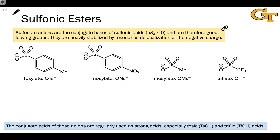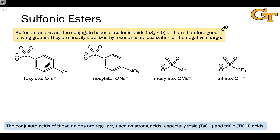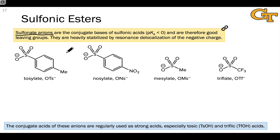So let's look at that now. When we link up each of those sulfonyl groups with an anionic oxygen atom, we end up with a heavily stabilized anion — the so-called sulfonate anions. If you stare at these long enough, you'll realize that they look a lot like sulfuric acid.